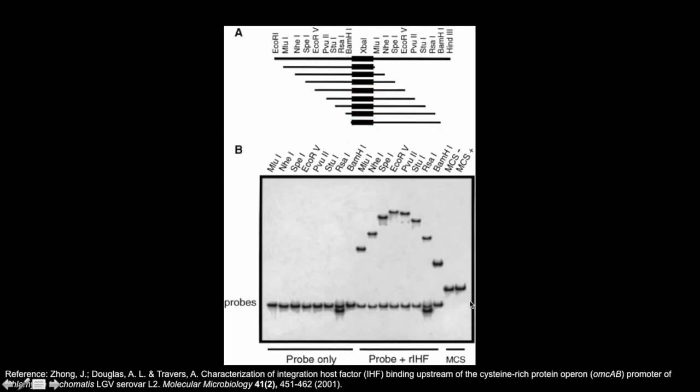In the pair of lanes on the far right, you'll see a couple more controls. The researchers simply cut the P-Bend plasmid with restriction enzymes on the end and incubated with and without IHF. Since these bands run at roughly the same distance, this lets us know that the IHF protein is not binding to the plasmid without the insert, which would lead to a shift in the MCS plus lane. This lets us know that IHF binds specifically to our region of interest.